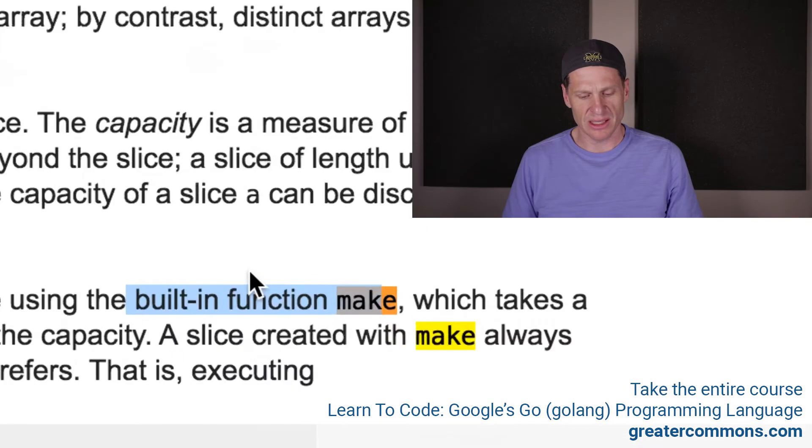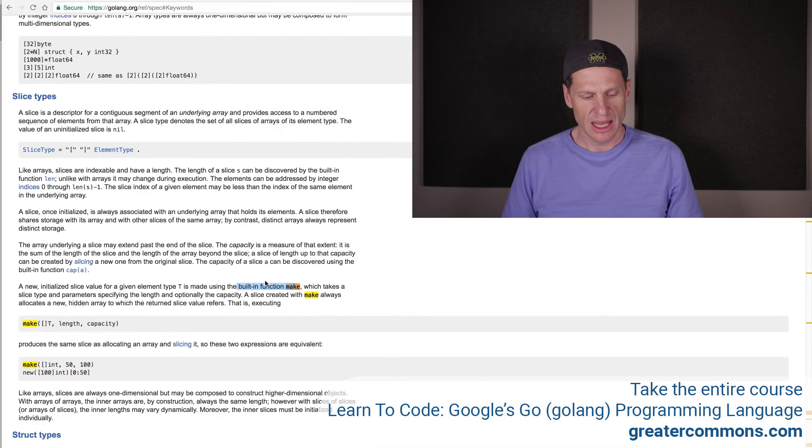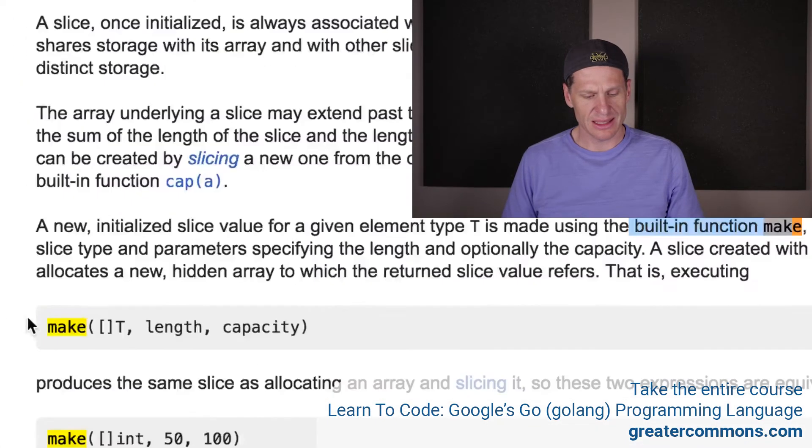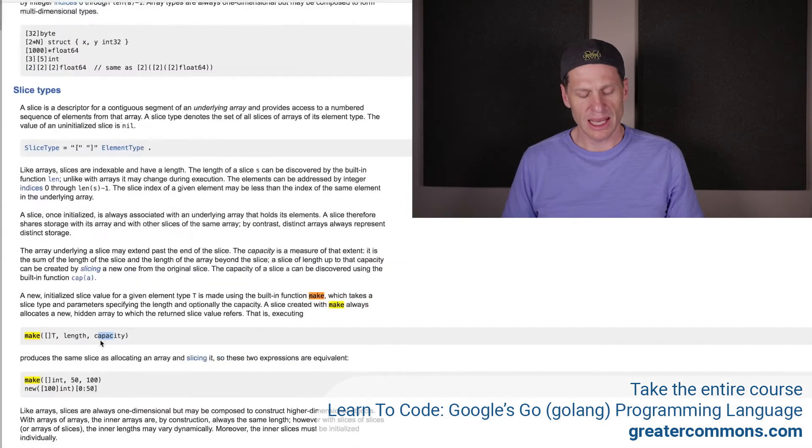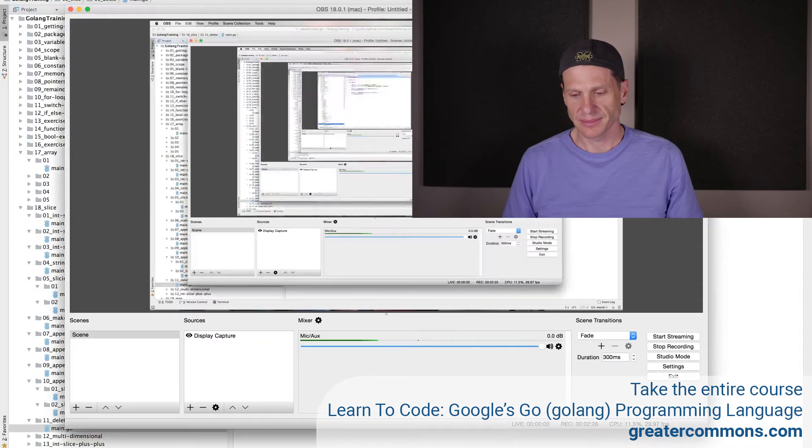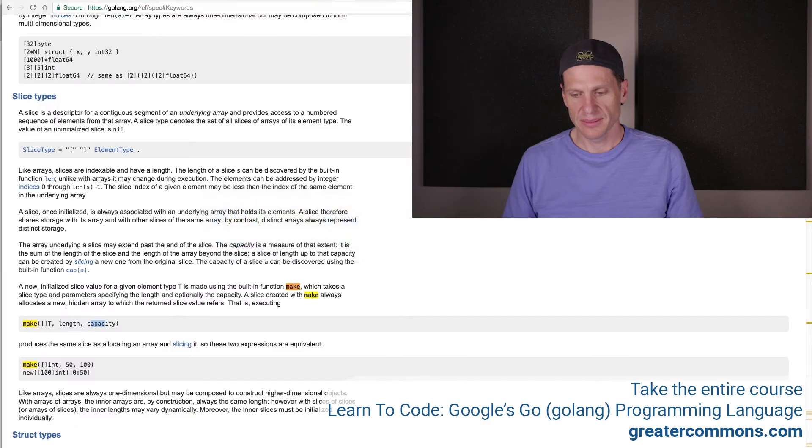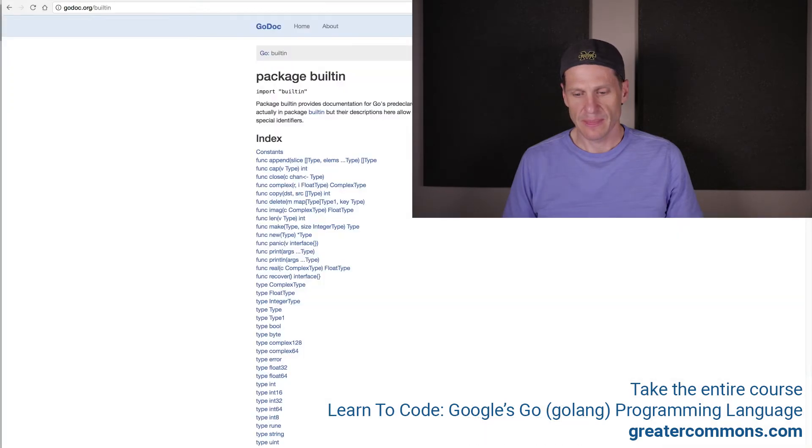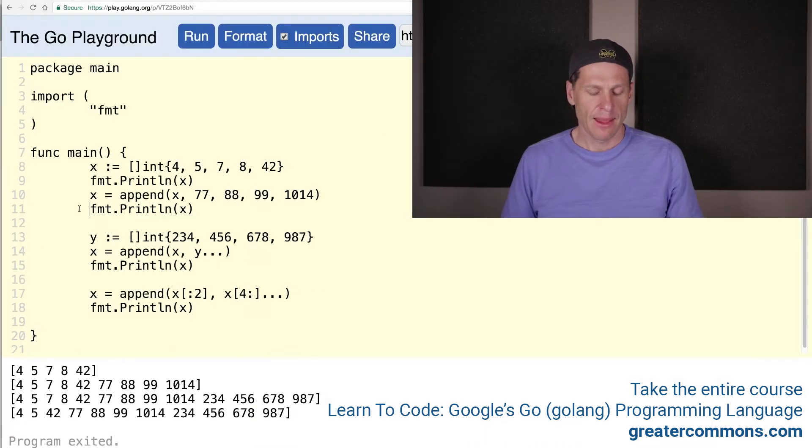I don't think it is. I don't see make up there. So make. Let's look for make. Make built-in function make. I love it. It's a built-in function. It's another built-in function make. And so make takes a slice of some type, a length, and a capacity. What the heck does that mean? Let me show you.